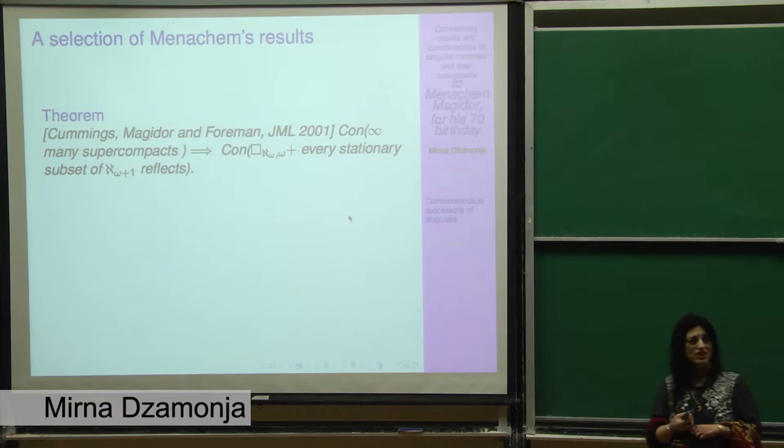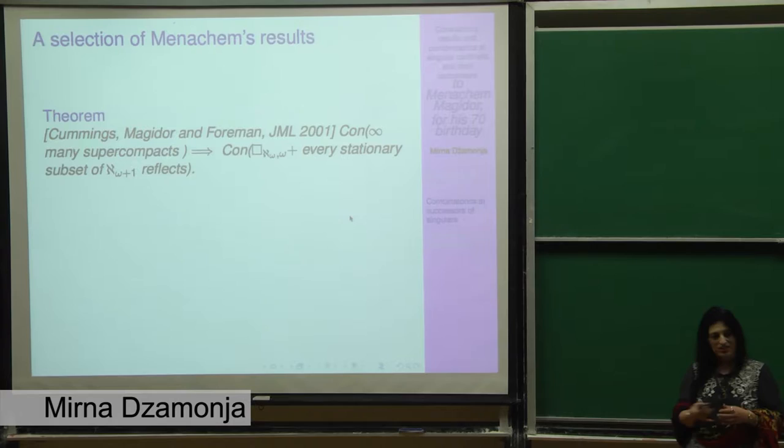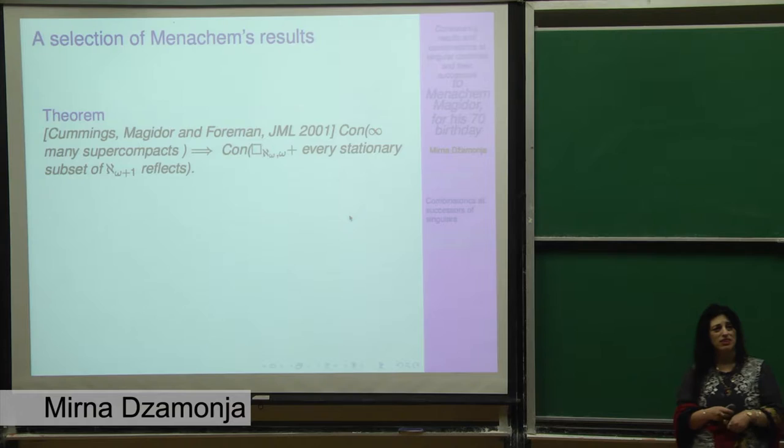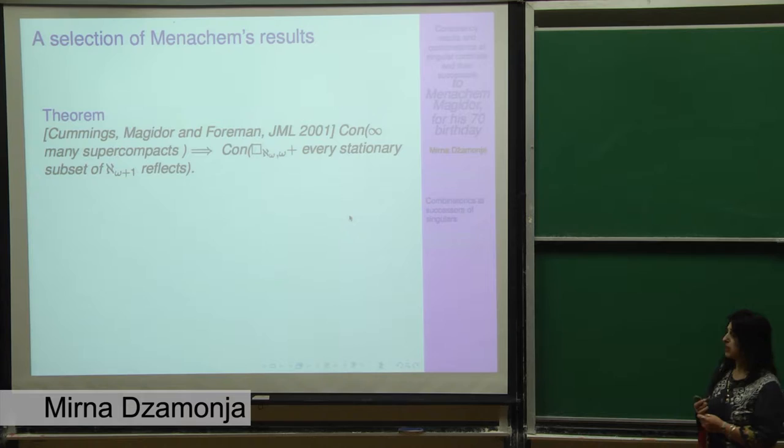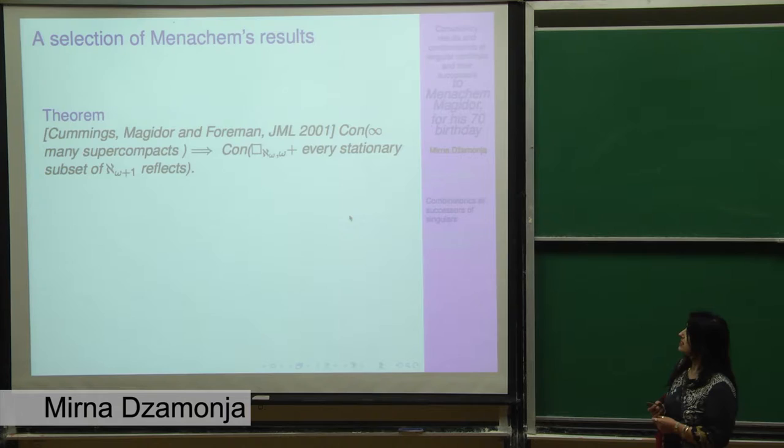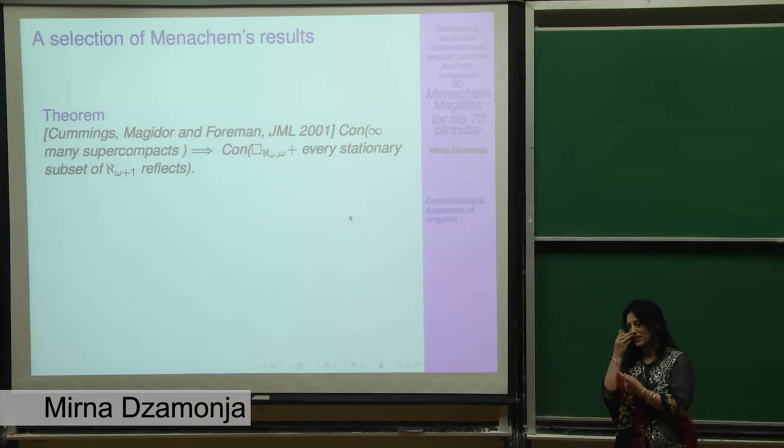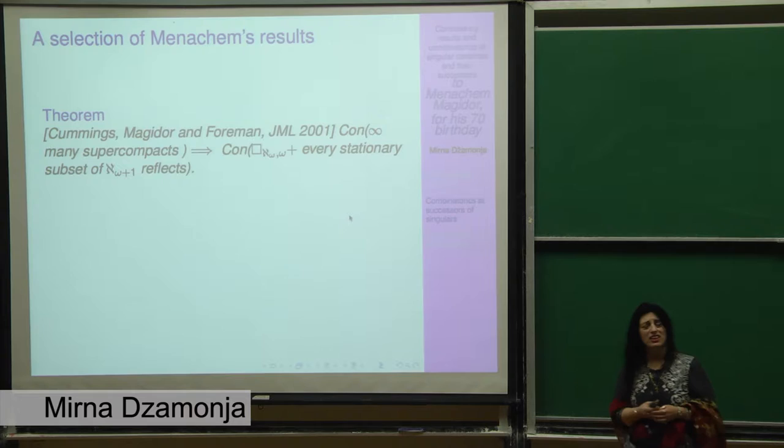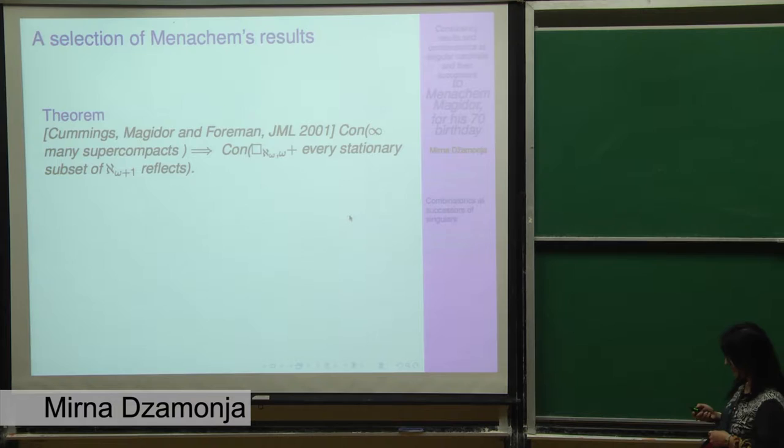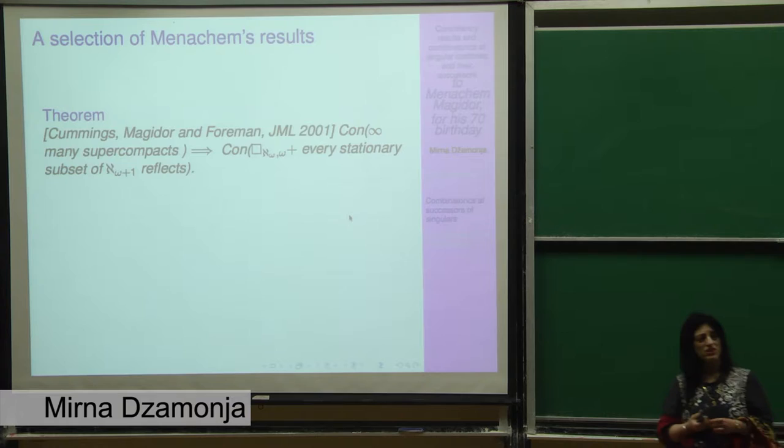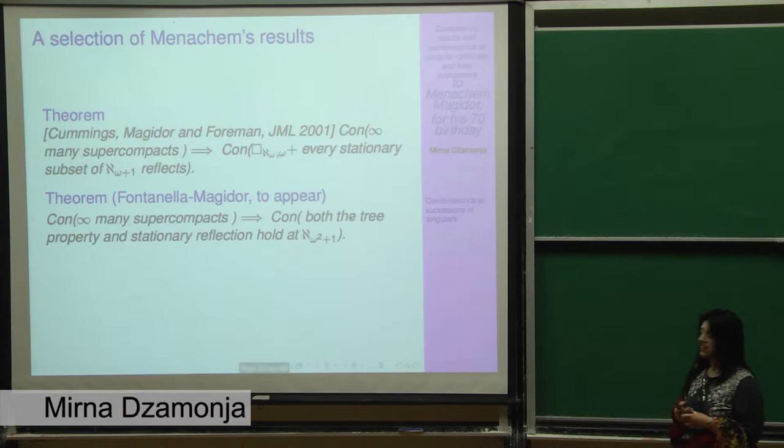Here is one result that comes from a long series of four papers that Cummings, Foreman and Magidor wrote about squares. This was a very nice series of papers in which they combined forcing techniques and PCF. It's one example of the results from a paper published in 2001 in Journal of Mathematical Logic. From the consistency of infinitely many supercompacts, they get this tight, probably the best possible correction of a square and reflection, because the square and reflection don't fit together. But they proved that in this particular instance you can have quite a lot of the square and quite a lot of reflection together. This notation square aleph omega omega means the square sequence between aleph omega and aleph omega plus, where at every point you have omega many choices for the square there.